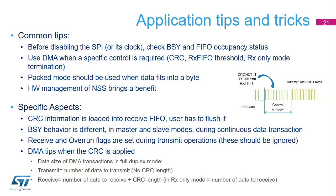There are some additional specific aspects which should be taken into account when designing for an SPI network. The receiver always loads CRC information into the received FIFO. The user has to account for this in the buffer and flush it. The busy flag should not be used for any data handling but to check for ongoing traffic. The BSY bit stays set between data frames during the master continuous data transactions. It always drops low for at least one SPI clock cycle between data frames in slave mode, no matter if the communication is continuous or not. When the node transmits data only, the receive flow stays active. The user must ignore all receive and associated overrun events in this case.